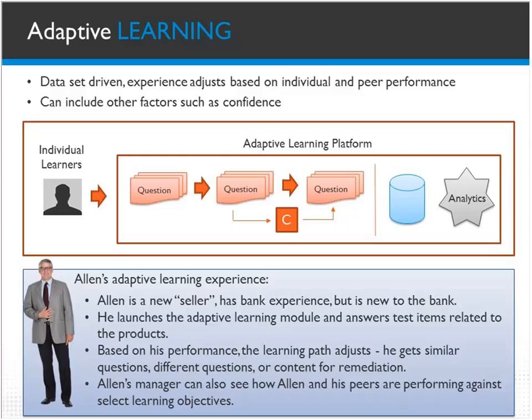You'll get a combination of immediate feedback, immediate remediated feedback, or new questions as you go. The engine looks at overall performance and uses predictive analytics to adapt the learning path of what you'll see next. For example, Alan as a new seller launches the adaptive learning module and starts answering test questions related to products. Based on his performance, his learning path adjusts — he'll get similar or different questions, feedback on interim items, or remediated content.